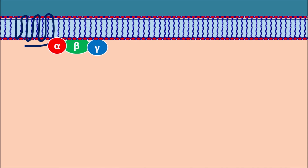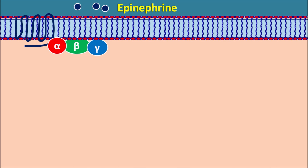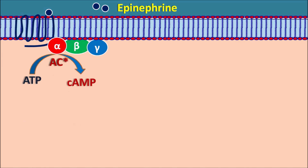The sympathetic system can act through the beta receptors. These beta receptors are G-protein coupled receptors associated with alpha, beta, and gamma subunits. When epinephrine binds to these beta receptors, they are activated and they stimulate the adenylyl cyclase system. Adenylyl cyclase is an important enzyme which can convert ATP into cyclic AMP.